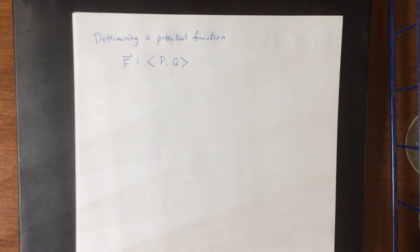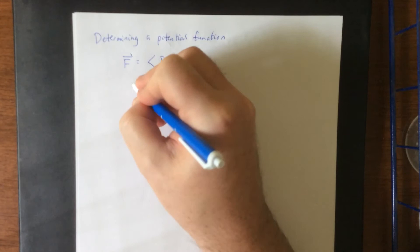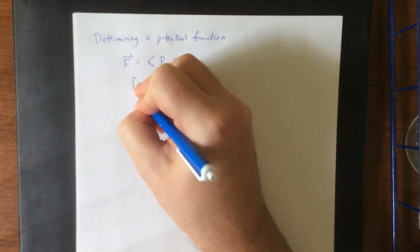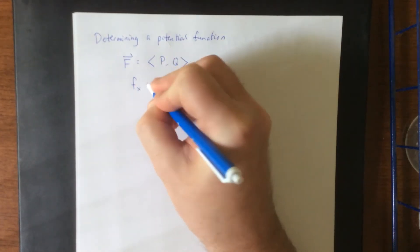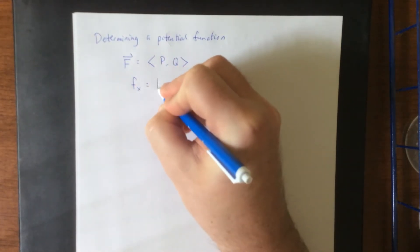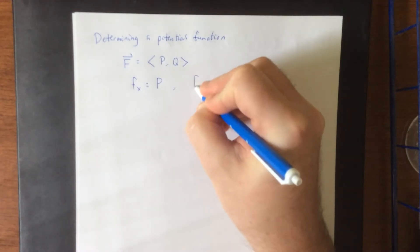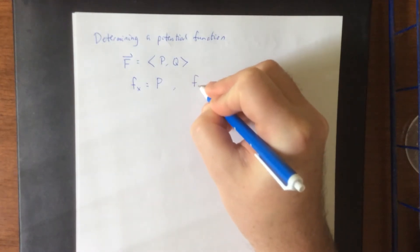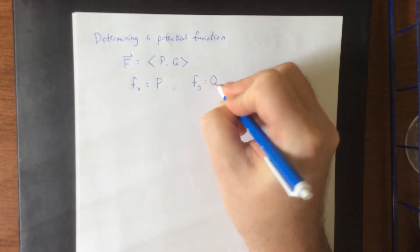Here's what you are able to deduce at this point. We know that the partial derivative of your generating function with respect to x is equal to p. We also know that the partial derivative of f with respect to y is going to be q.